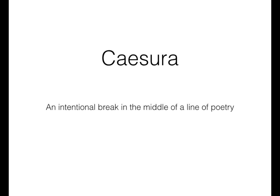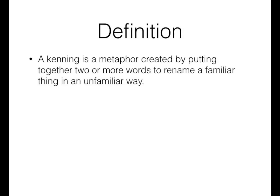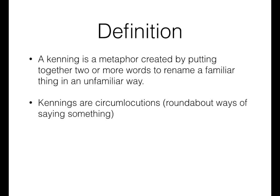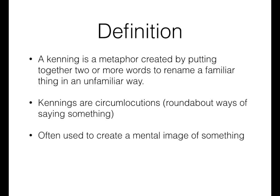By definition, a kinning is a metaphor created by putting two or more words together to rename a familiar thing or person in an unfamiliar way. A kinning is an example of a circumlocution, which is a roundabout way of saying something. Usually a kinning is a combination of two, but sometimes more, words that when put next to each other create an interesting image. Often the two words are not related to each other to begin with, so when they are combined, they can cause readers or listeners to suddenly see a concept in a completely new light.